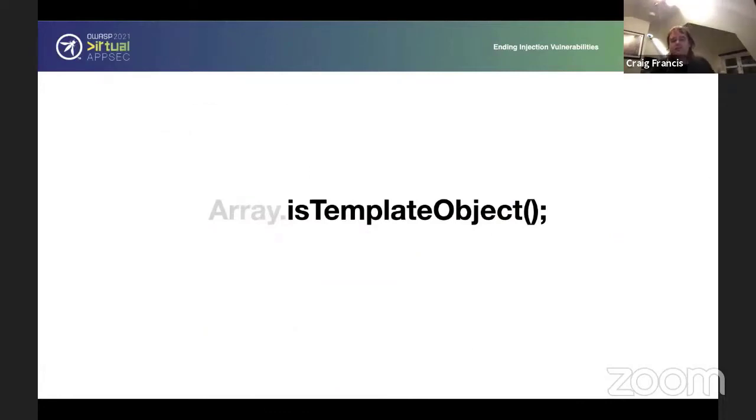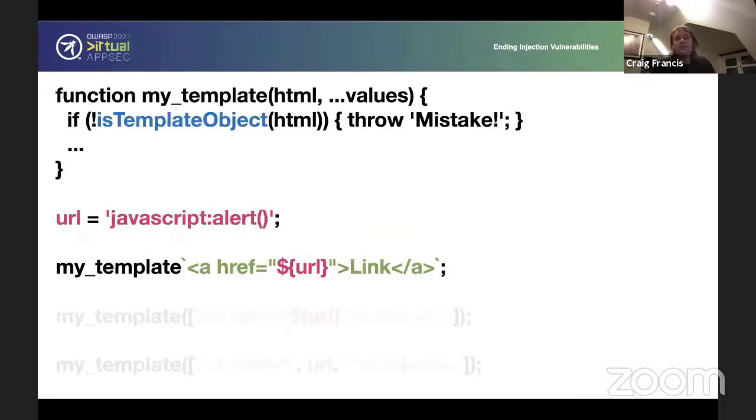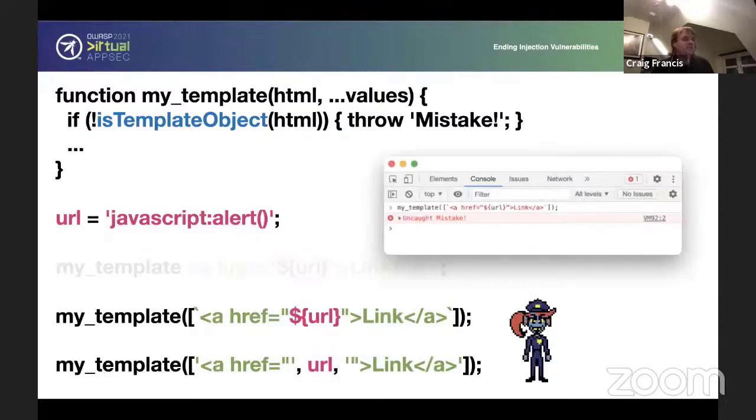The solution to this is a function that's been developed at the moment. There's a polyfill in node, and it's been specced at the moment in JavaScript, where it's basically is template object. It's a really simple function, and it just simply says, is that first argument from a template? And if it's not, then you throw a mistake. So in this case, where it's been used correctly, all good, everyone's happy. And in this case, it was not provided as a template object, and therefore it's able to reject it, and you get an exception thrown.